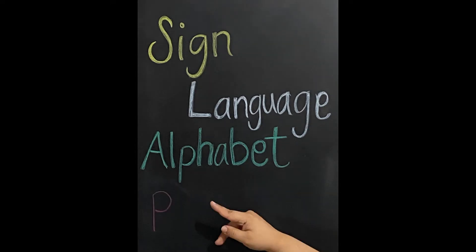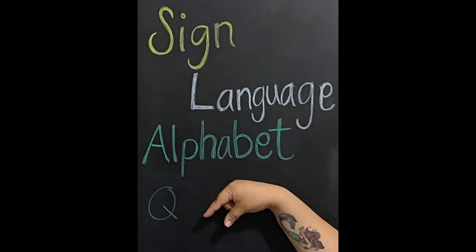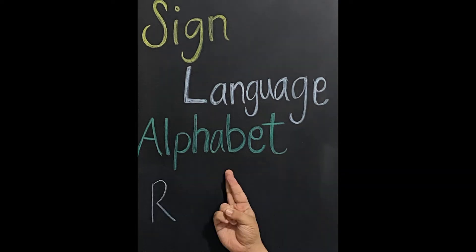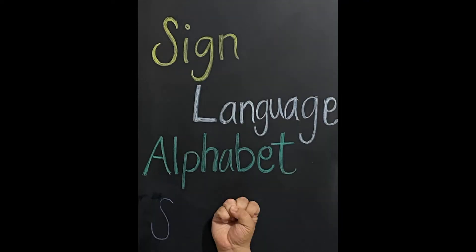For P, you're going to act like you're pointing and then you're going to make your middle finger point down. For Q, you're going to act like you're showing a little bit and then you're going to push your wrist down. R is like if you're telling me you have to go to the bathroom, with your index finger in front of your middle finger. S is just a fist with your thumb in front of your fingers.